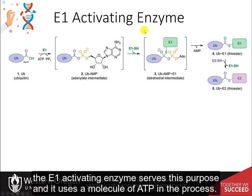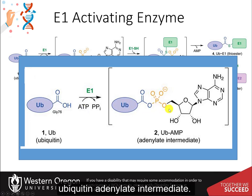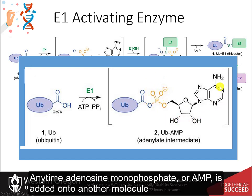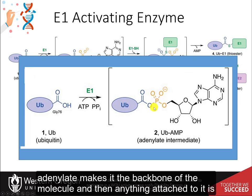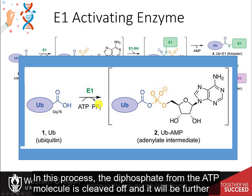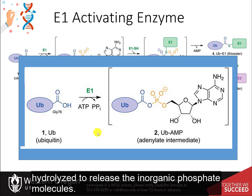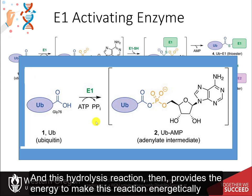So in the ubiquitination system, the E1 activating enzyme serves this purpose, and it uses a molecule of ATP in the process. In the first part of the reaction, the E1 enzyme uses a molecule of ATP to form a ubiquitin adenylate intermediate. Anytime adenosine monophosphate, or AMP, is added onto another molecule, it's called an adenylate, and it's linked through a phosphoester bond. In this process, the diphosphate from the ATP molecule is cleaved off and will be further hydrolyzed to release the inorganic phosphate molecules. This hydrolysis reaction, releasing the two phosphate groups, releases a lot of energy and provides the energy to make this reaction energetically favorable in vivo.